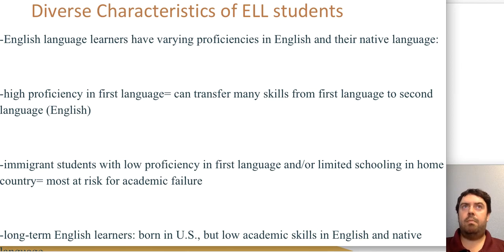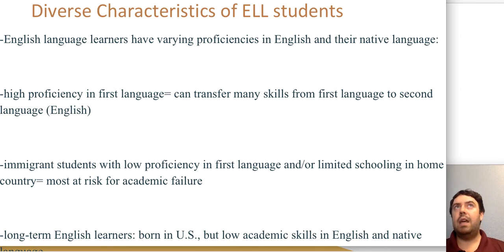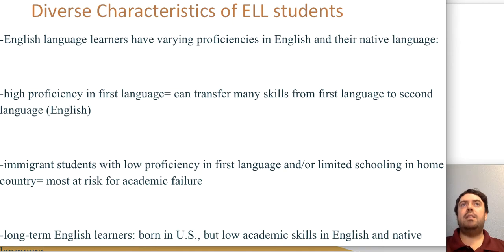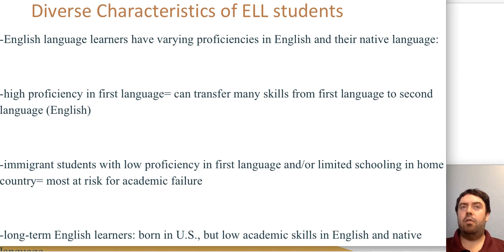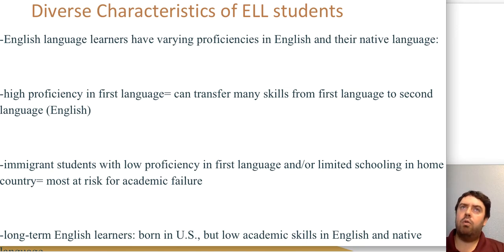We can't assume ELLs have no English exposure, and we can't assume they're fluent English speakers either. Especially, we can't assume they have academic language. If they are classified as an English language learner, that means they are still not completely academically proficient in English, meaning they still need to develop academic vocabulary, complex sentences, and the ability to express higher-order thinking skills through speaking, reading, and writing.